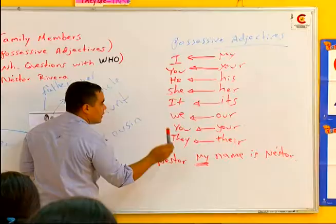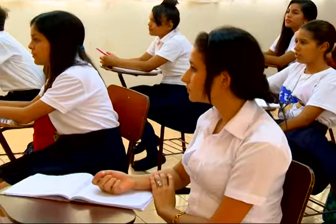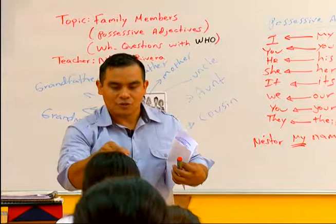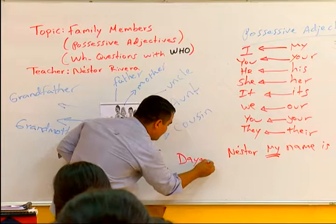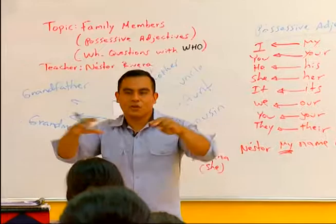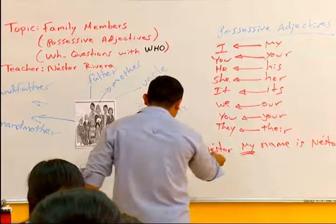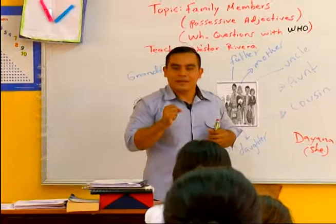My name is Néstor. ¿A quién le pertenece ese nombre? A mi persona, que sería I. What is your name? Diana. Entonces, si hablo de Diana, ¿quién es Diana? ¿Él o ella? Ella — she. ¿Cuál es el posesivo de she? Her. Entonces yo digo: her name is Diana. Her name is Diana.